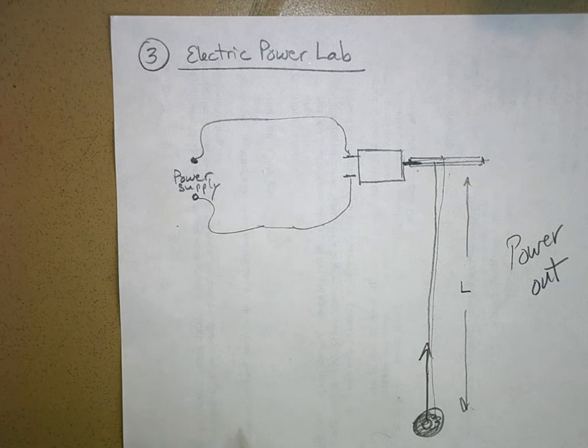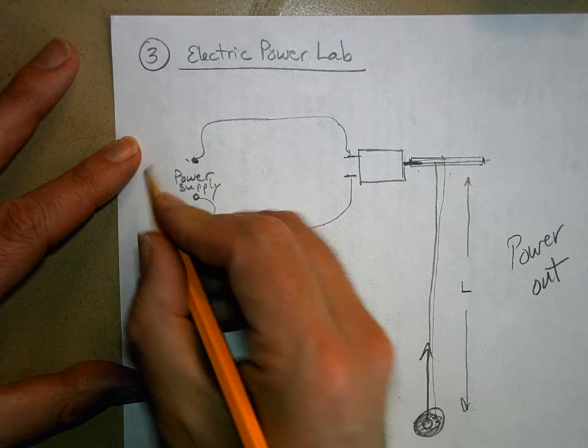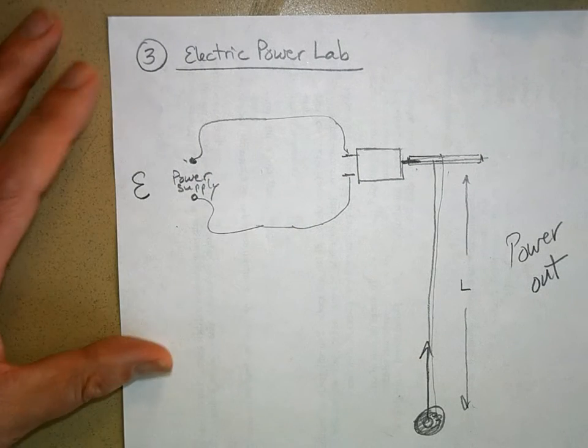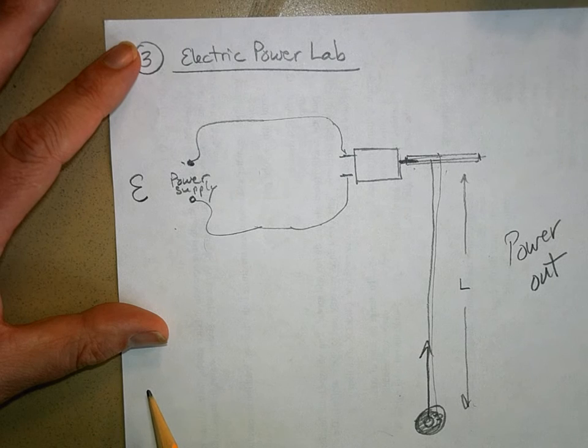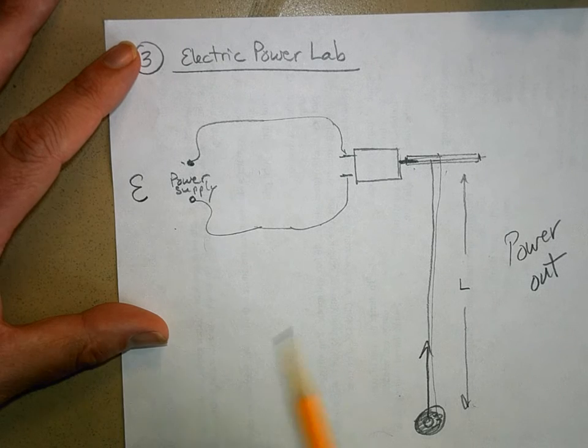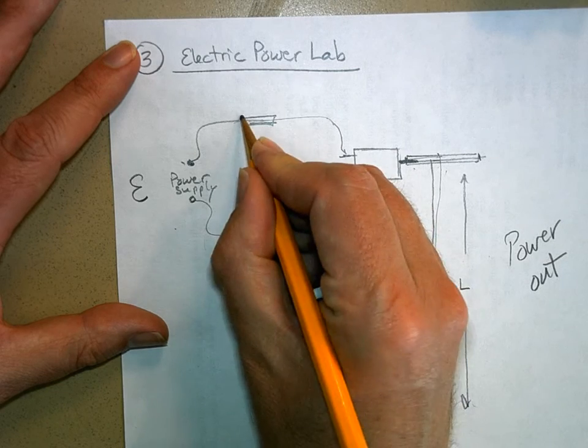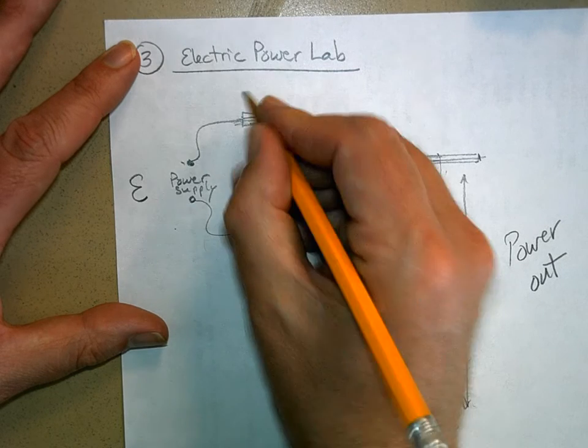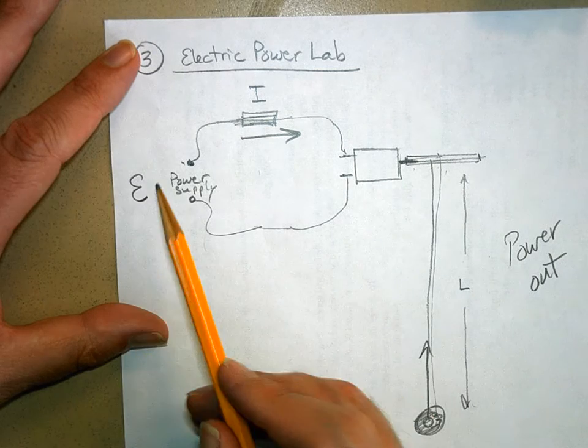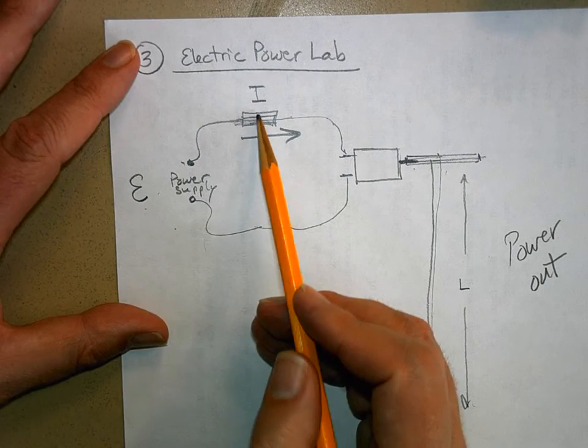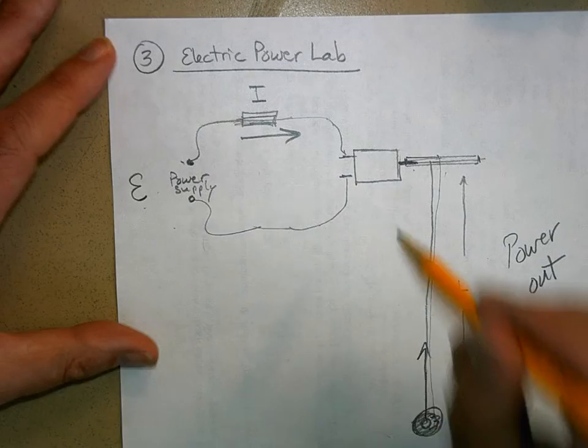We're going to measure power that we get out of the motor, but we're also going to measure two other things. We're going to measure the voltage E put out by the power supply, and then we'll use the Vernier probes to measure the current. We'll stick that current probe in there, so we'll measure I. What do you get when you multiply the voltage times the current? You get the power that we're putting into the motor.